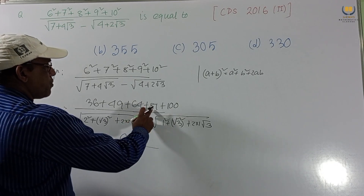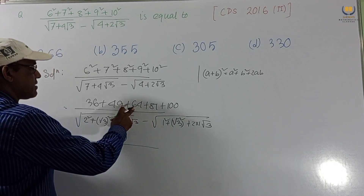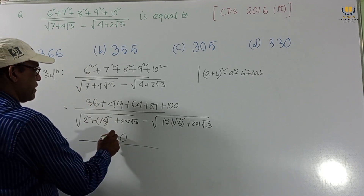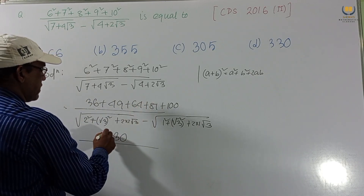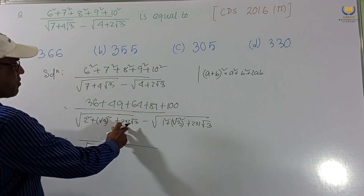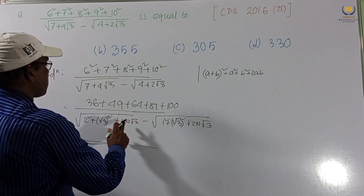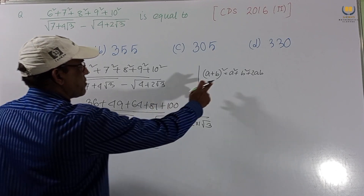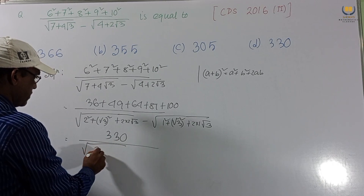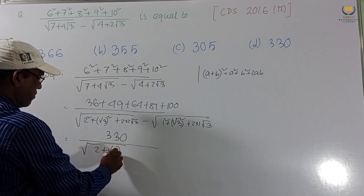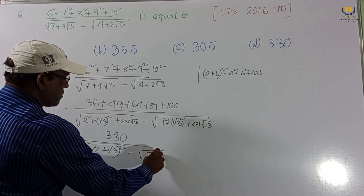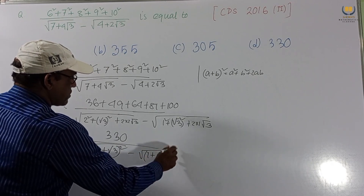Adding the numerator: 36 + 49 + 64 + 81 + 100 gives us 330. Using the identity a² + b² + 2ab = (a + b)², the first radical becomes (2 + √3)² and the second becomes (1 + √3)².